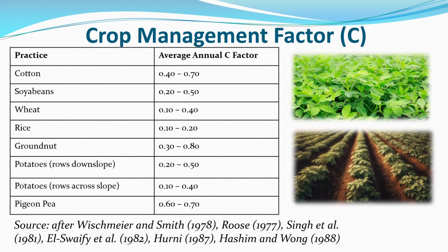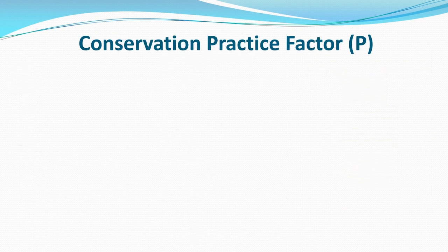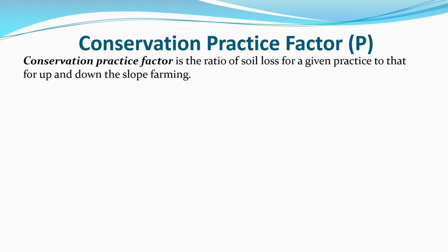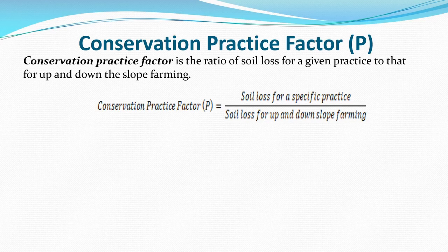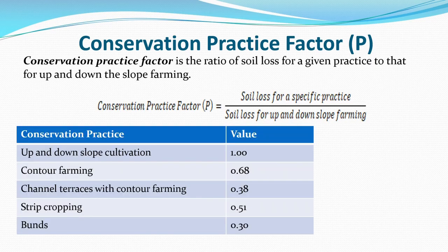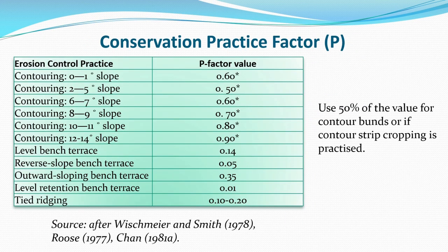The Conservation Practice Factor P is the ratio of soil loss for a specific practice to the soil loss for up-and-down slope farming, which has a maximum value of 1. For contour farming, P = 0.68; for bunds, P = 0.30. For contouring on 0–1 degree slope, P = 0.60; on 12–14 degree slope, P = 0.90; for level bench terraces, P = 0.14.